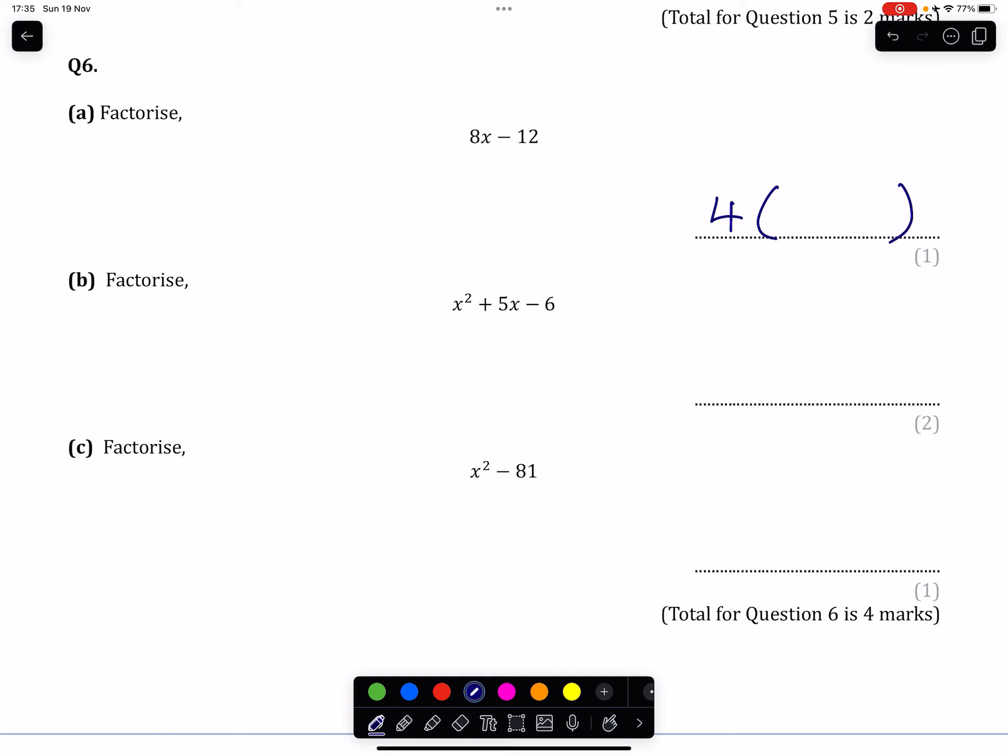What I'll be left with inside the brackets: 8x divided by 4 will give us 2x, and minus 12 divided by 4 will give us minus 3. What's inside our brackets cannot be factorized any further, therefore we are done.